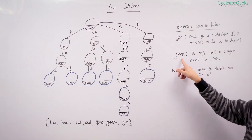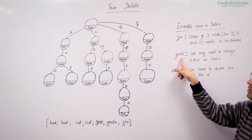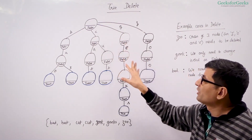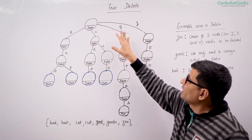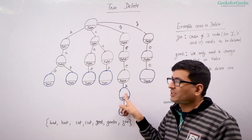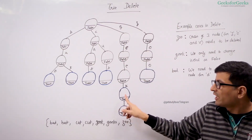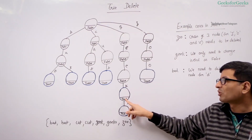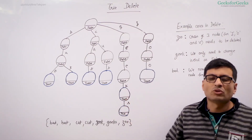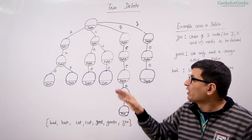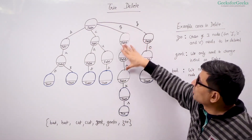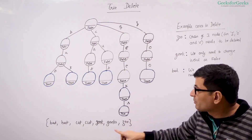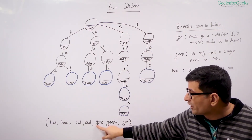Let's see another example: geek. So when you want to delete geek, what changes will you make? You only need to mark the is_end field for this particular node from true to false. That's the only thing we need to do to delete geek. We cannot delete any node because these nodes are also used for the other word geeks, which is present in the dictionary. We are only deleting geek.